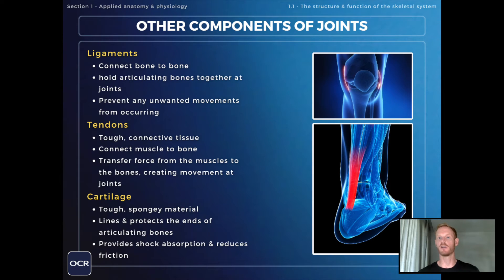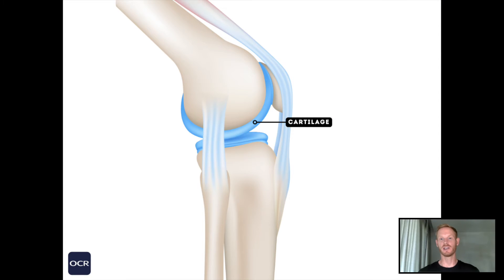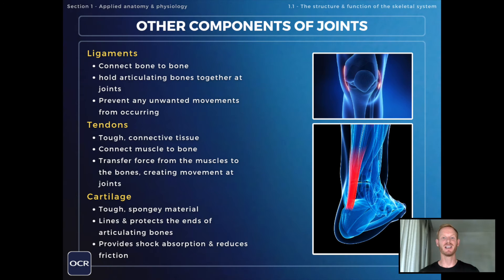The final component of a synovial or freely movable joint that you need to know about is cartilage. Cartilage is a tough, spongy material that lines the ends of articulating bones. In this image you can see a layer of cartilage covering the ends of the bones in the knee joint. The role of cartilage is to provide some shock absorption and to limit wear and tear on the bones by reducing friction.